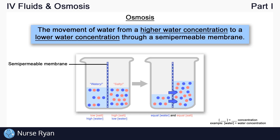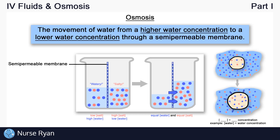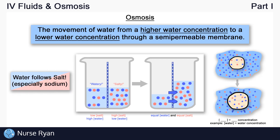This process of osmosis is a passive process, and it's the same way that water moved from the extracellular fluid into the intracellular fluid — because of the difference in water concentrations. One last trick to help remember how osmosis works: water follows salt, especially sodium. Because the right side was super salty, water followed that salt into the right side until the concentration evened out. So if you're in a test and can't remember exactly how osmosis works, at least remember that water follows salt — that might get you the right answer.